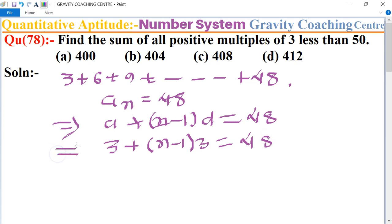Now we take 3 common in both the terms, so it will become 1 and n minus 1 equal to 48. 48 is cancelled by table of 3, this becomes 16, and n minus 1 plus 1 cancel, so the total numbers are 16.